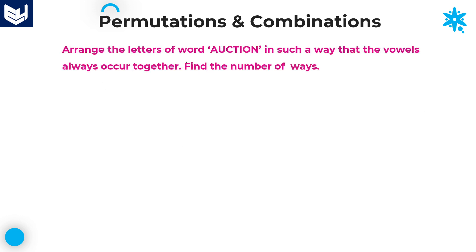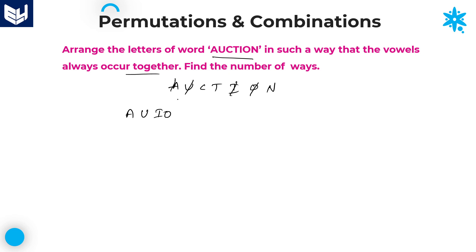Last question in this session: Arrange the letters of the word AUCTION — A-U-C-T-I-O-N — in such a way that the vowels always occur together. Find the number of ways. In this word, the vowels are A, U, I, O — these are 4 vowels. According to the given condition, all vowels occur together. We need to take all 4 vowels as a single entity, because all 4 vowels come together.